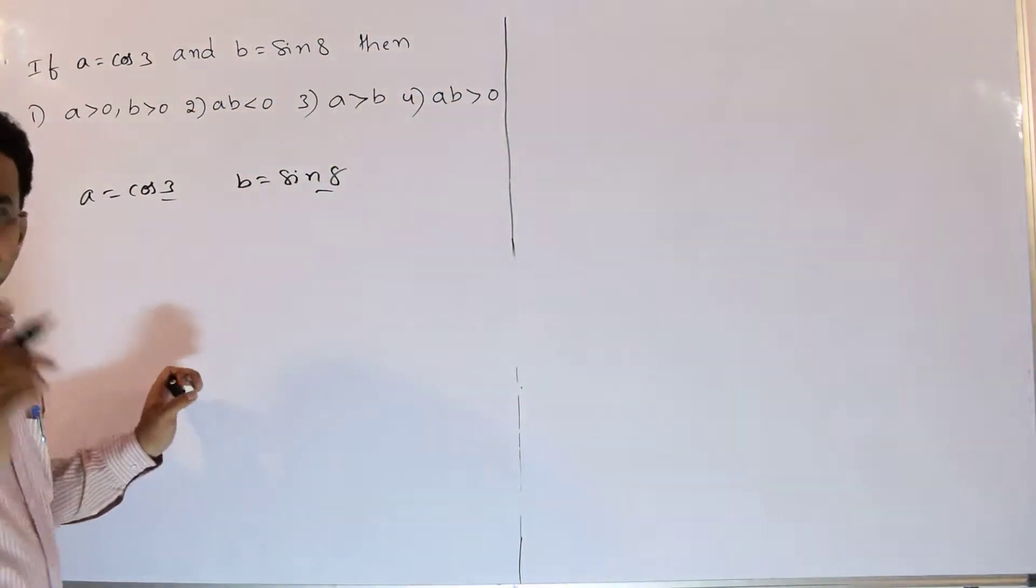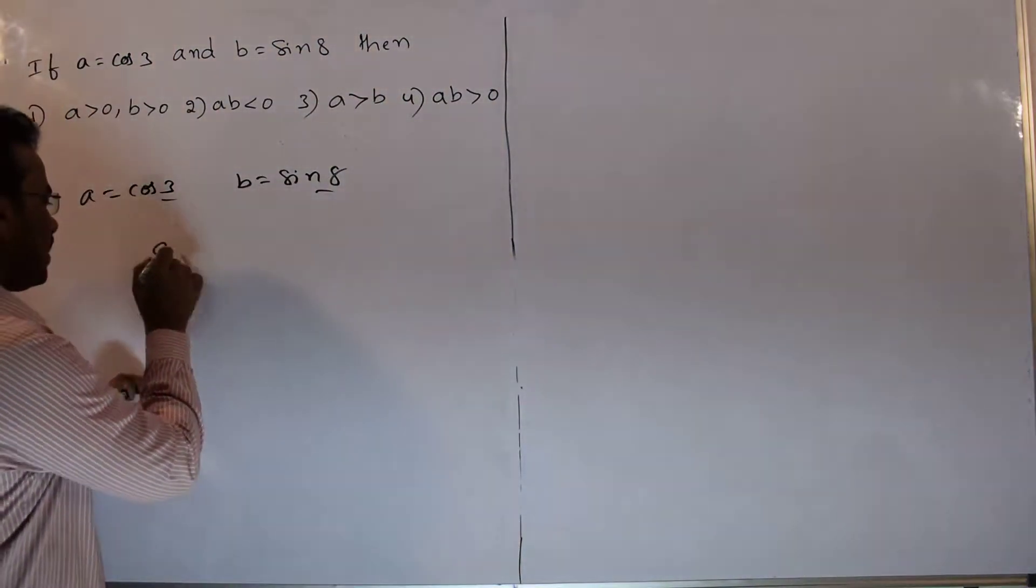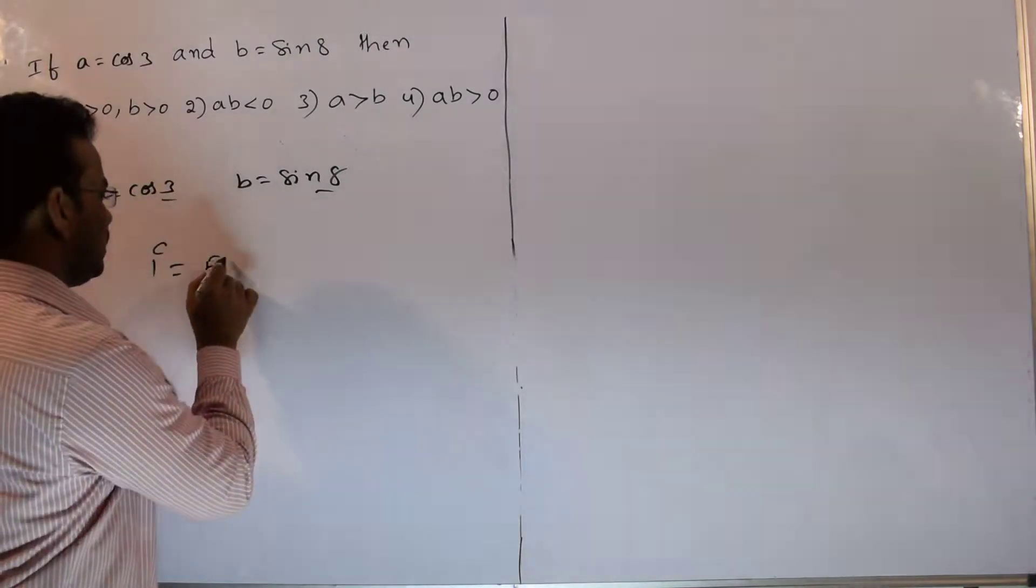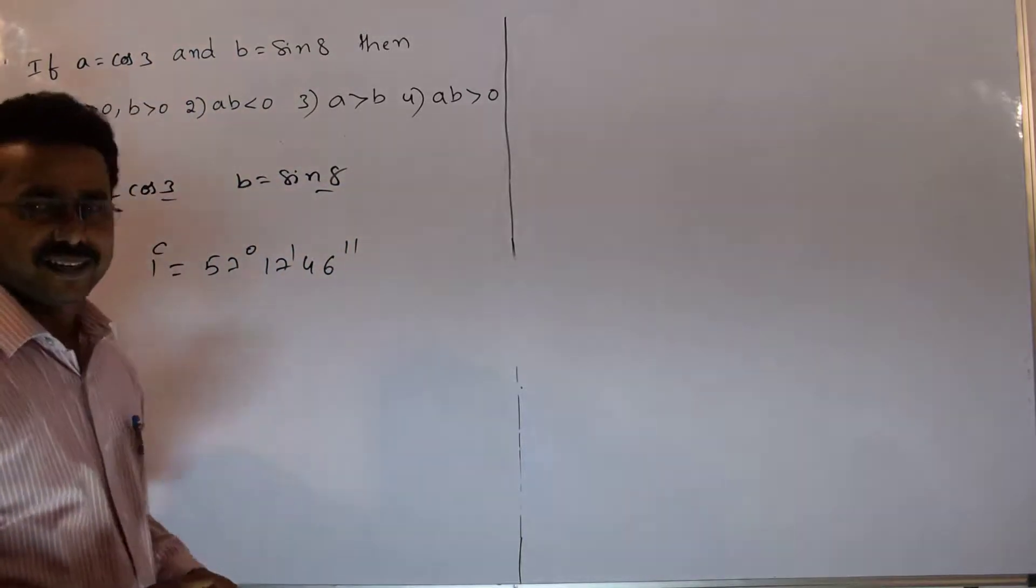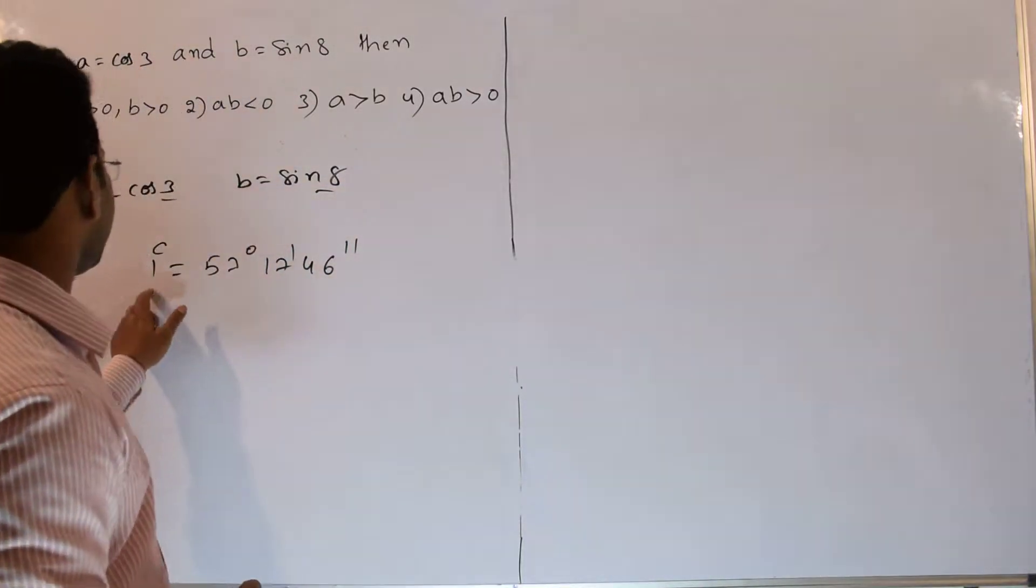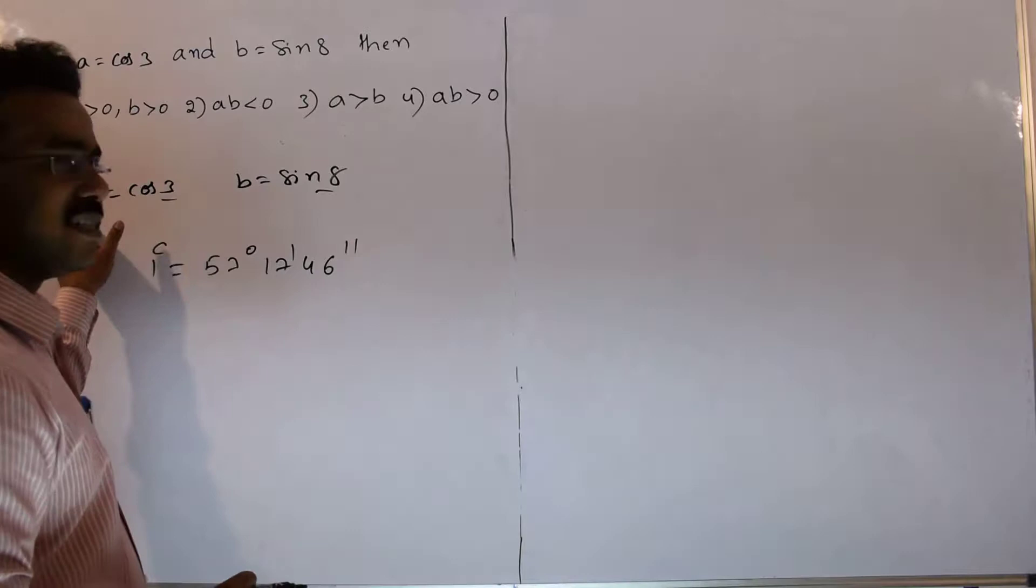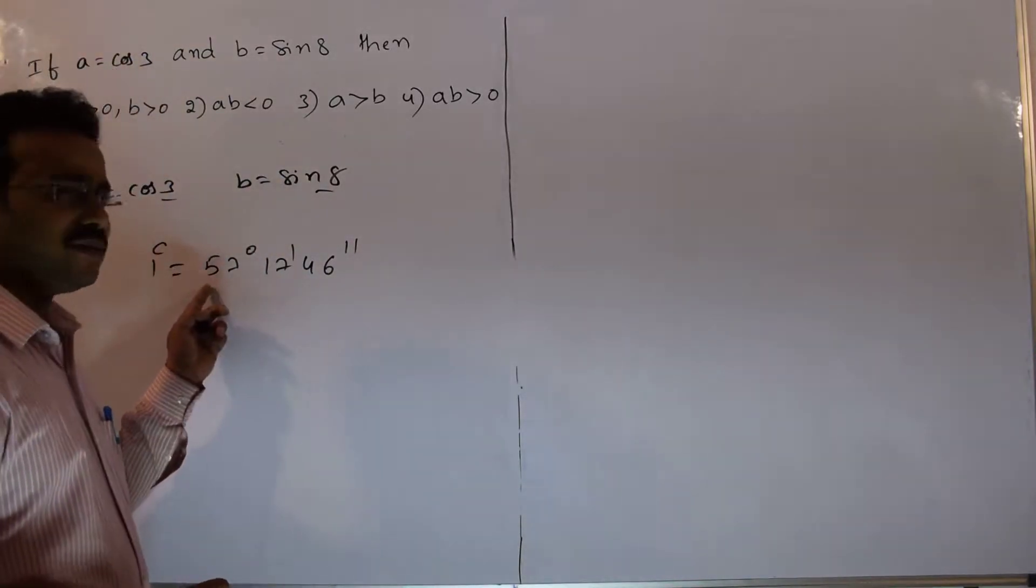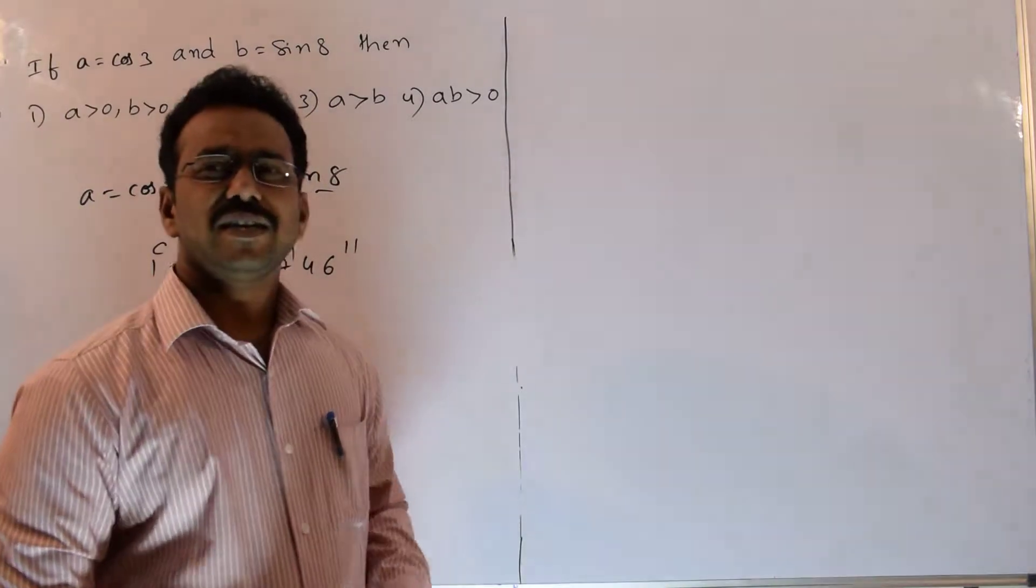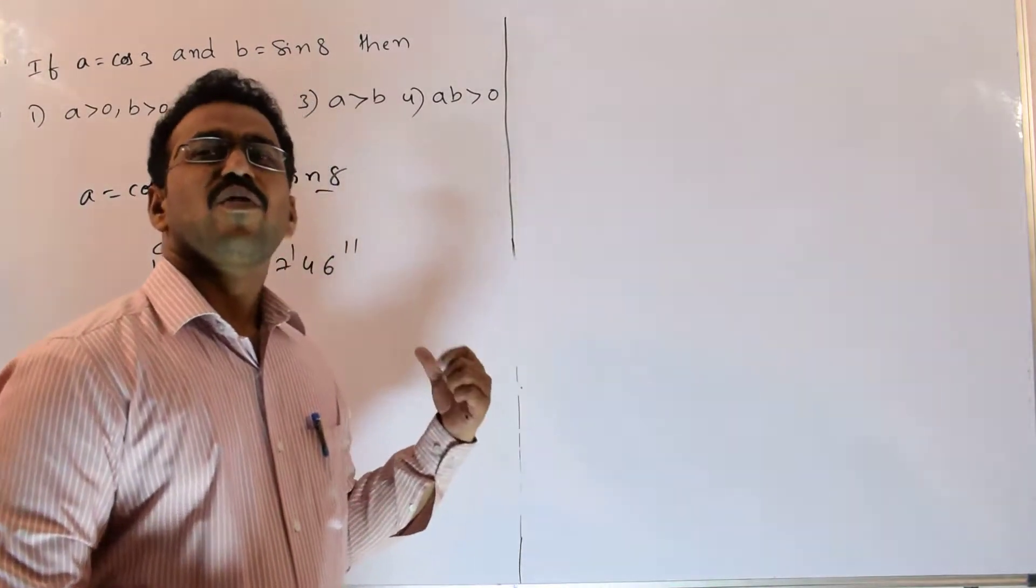Now we have one relation. What is the relation? 1 radian equals to 57 degrees 17 minutes 46 seconds, almost 58 degrees. But what is A equal to? Cos 3 radians. Cos 3 radians means you have to multiply it by 3. 3 times almost 58 degrees, 150 plus around 174 degrees.